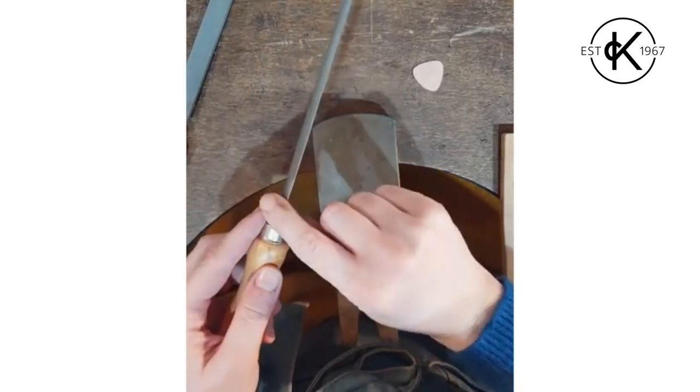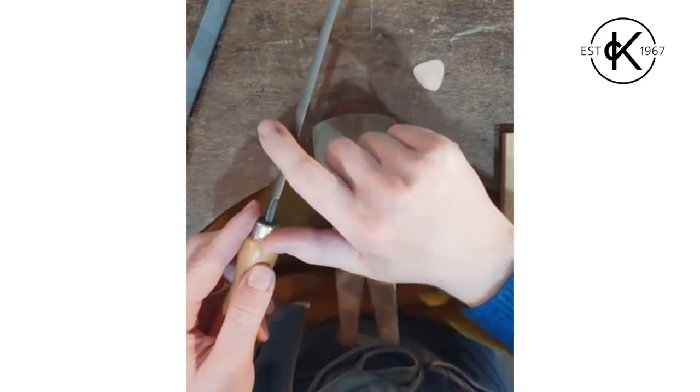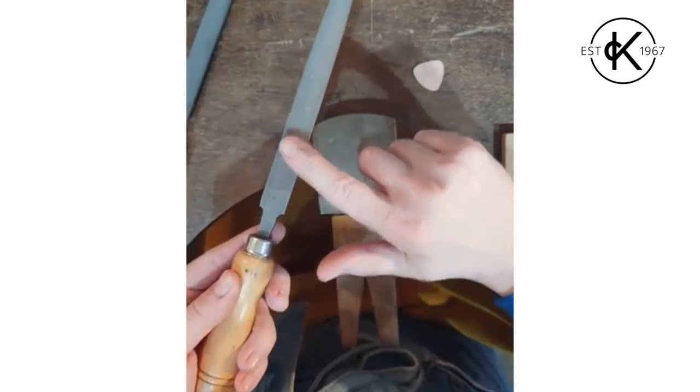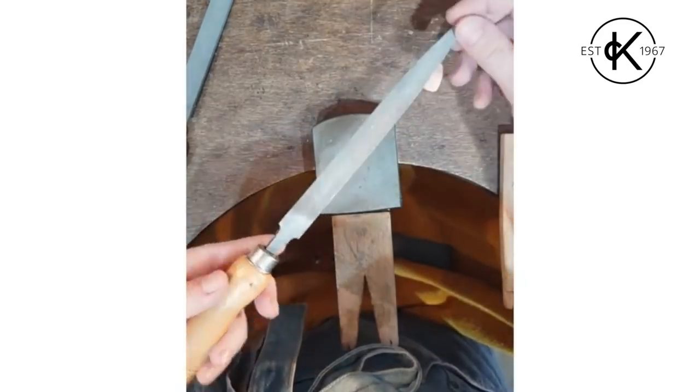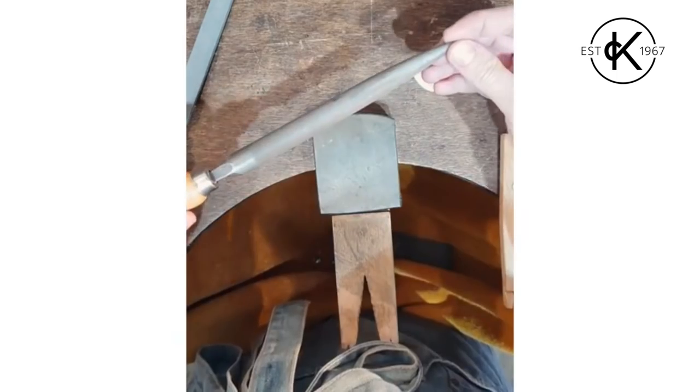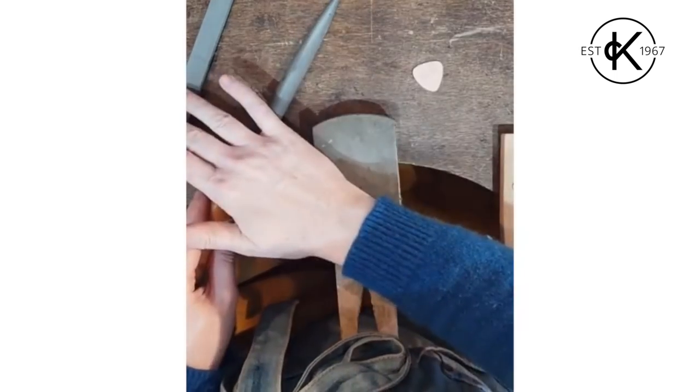The other thing is you get flat files and half-round ones. So half-round file, where it's round on one side and flat on the other, is going to be a lot more useful if you only have one file compared to just having a flat file.